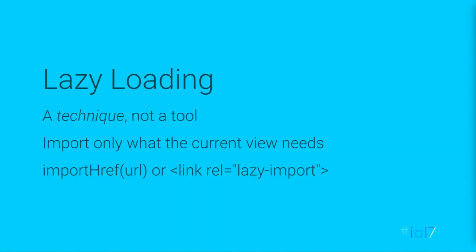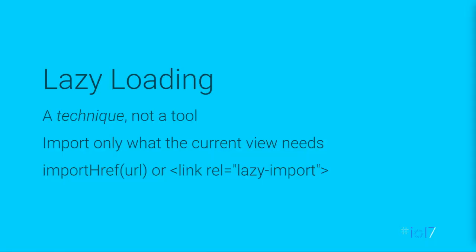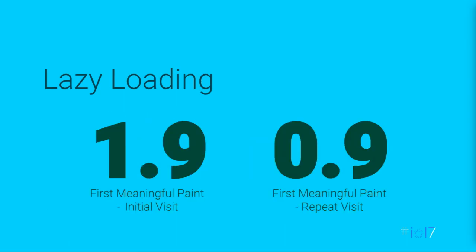Next, let's take a look at lazy loading. Lazy loading is not so much a tool but a technique, though we've put a lot of work into our tools to support it. The idea is that you only import what the current view needs to render, and import everything else on demand. In Polymer, we have the `importHref` function, which adds a new HTML import to your document, and `lazy-imports`, where you can declaratively describe the lazy structure of your application. Applying this along with the other optimizations brings first meaningful paint down to 1.9 seconds — another 40% improvement — while the repeat visit stays at 0.9 seconds.